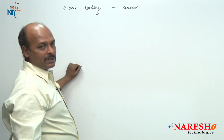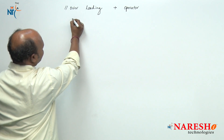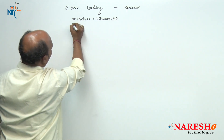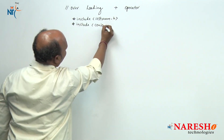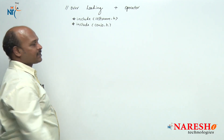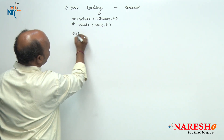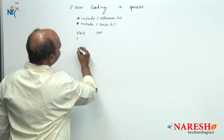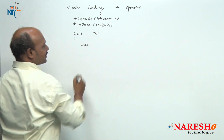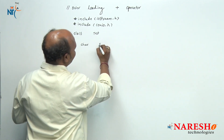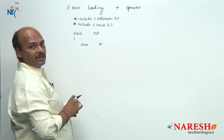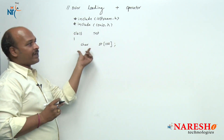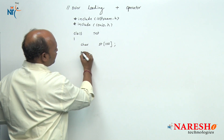Now here is the program concept for overloading the plus operator. First, the common header files: `#include iostream.h` and `#include conio.h`. Later I am going to declare a class — for example, class `test`. Inside this I am going to declare a char array `st[100]` as the string data member.